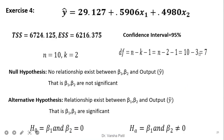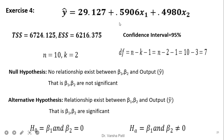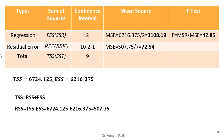Sometimes in exams or examples, instead of a data table they directly give the summary values and we must calculate from those. The equation of multiple linear regression is given, TSS is given and ESS is given. When these two values are there, we can calculate the third. Here n equals 10 and k equals 2. Since TSS equals RSS plus ESS, we can easily calculate RSS as TSS minus ESS, which equals 507.75.